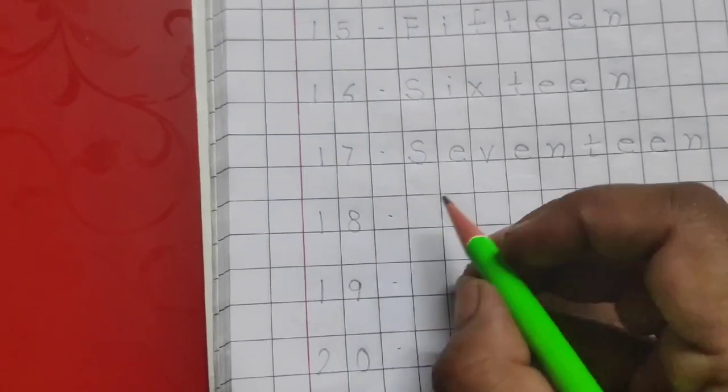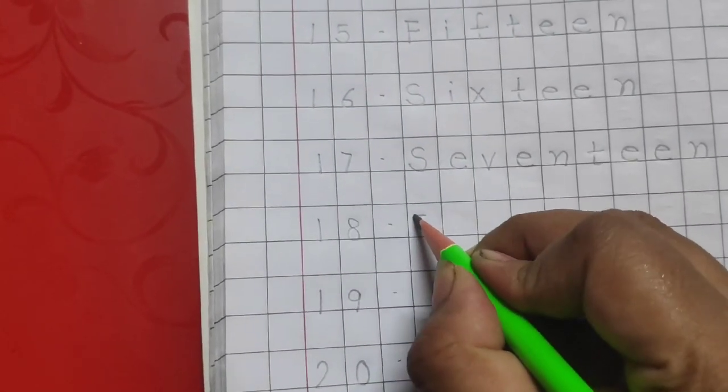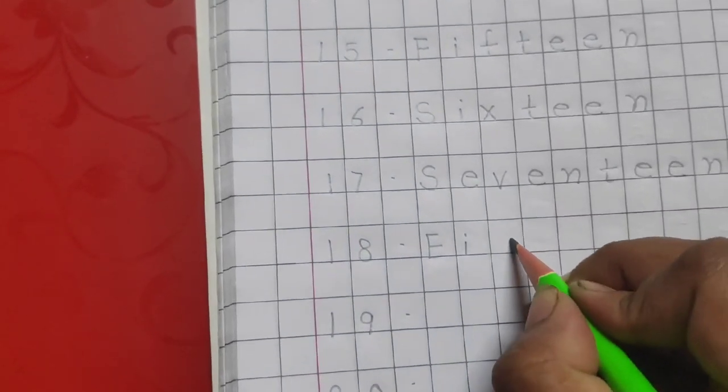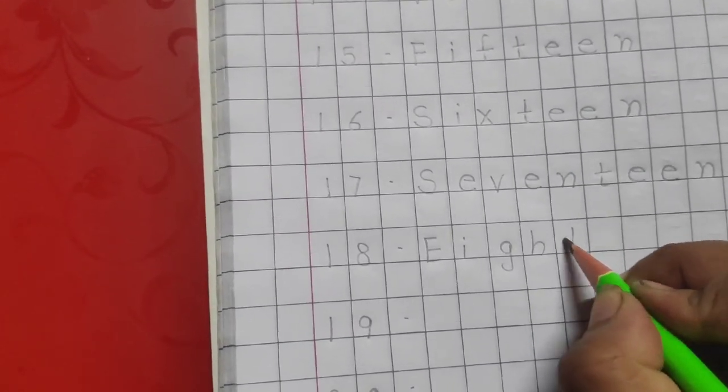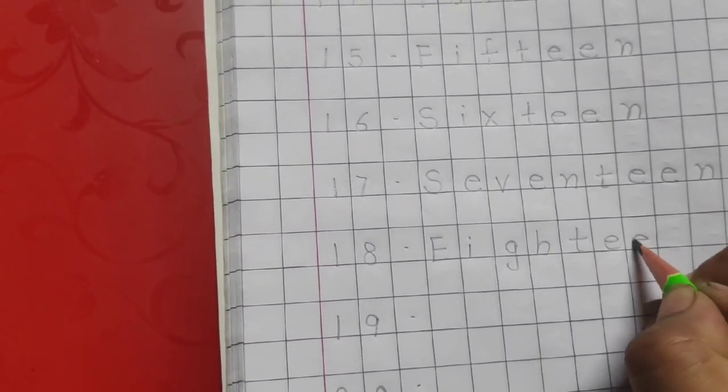The next number is 18. The number name for 18 is E-I-G-H-T-E-E-N.